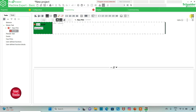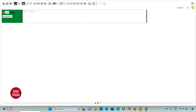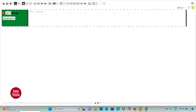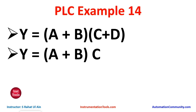I can click on full screen mode and then zoom in. Y is equal to A plus B into C plus D — there is an OR gate with A and B, and there is another OR gate with C and D, and then there is an AND gate with the output of A plus B and C plus D.